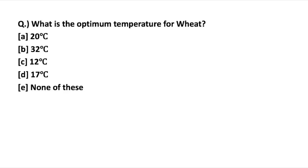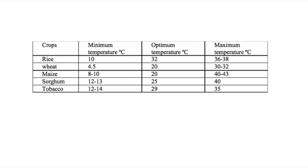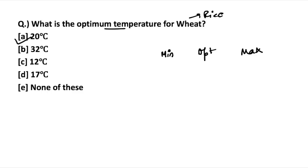The first question is: what is the optimum temperature for wheat? The optimum temperature is commonly asked for important crops like wheat, rice, and others. We are going to discuss the minimum, optimum, and maximum temperature for these important crops. Looking at the table with rice, wheat, maize, sorghum, and tobacco — the minimum temperature required for wheat is 4.5°C, the lowest among these. The optimum temperature, as the question asks, is 20°C.